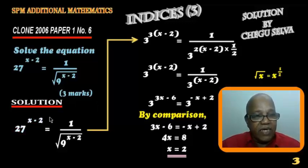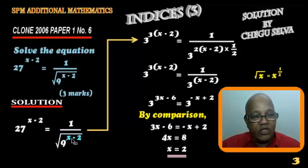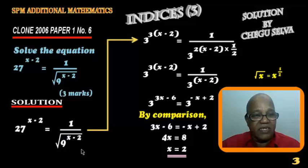Twenty-seven to the power of X minus two equals one over the square root of nine to the power of X minus two. Now the base number is three.